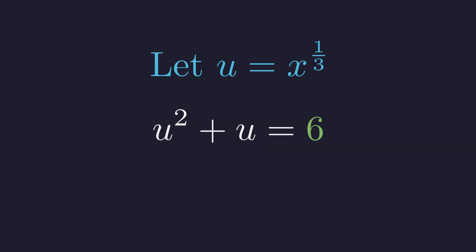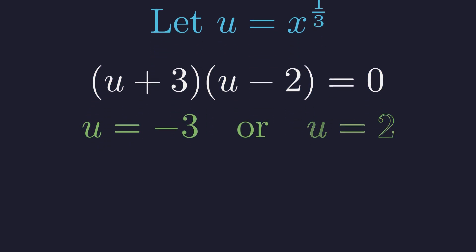Let's put it in standard form by moving everything to one side. So we get u squared plus u minus six equals zero. Now this factors nicely. We need two numbers that multiply to negative six and add to positive one. Those would be three and negative two. So we can write this as u plus three times u minus two equals zero. Which means u equals negative three or u equals two. And notice neither of these is zero, so we're good on that constraint.